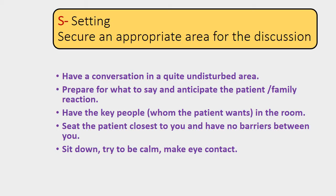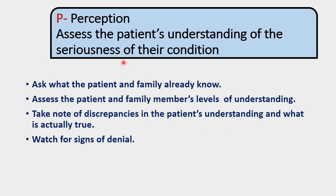P — Perception: assess the patient's understanding of the seriousness of their condition. Ask what the patient and family already know. You can say, 'Tell me more about this,' or 'What have other doctors told you?' or 'What was your discussion with someone else?' Assess the patient and family members' level of understanding — how much they understood and what they understood.